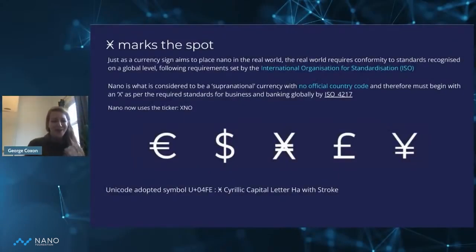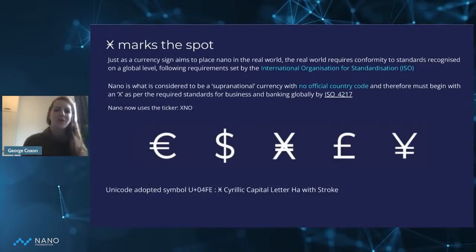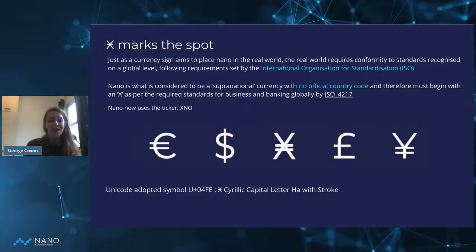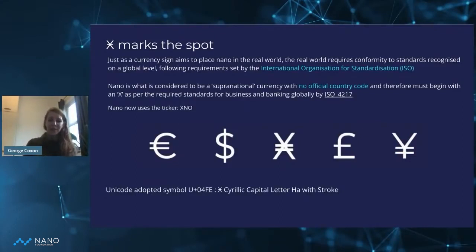To have a currency in the real world, there are a few hurdles that you must overcome. One is having a currency symbol — X marks the spot. Just as a currency sign aims to place nano in the real world, the real world requires conformity to standards recognized on a global level, and that means following the requirements set by ISO, the International Organization for Standardization.